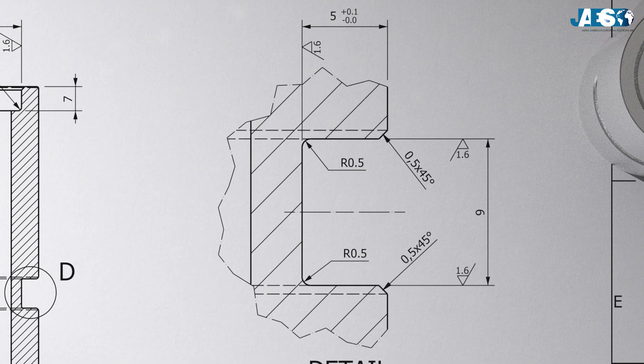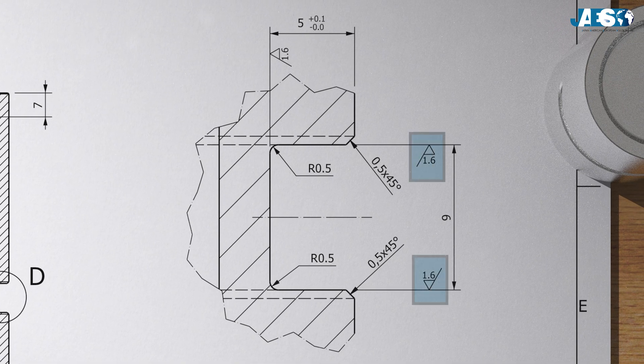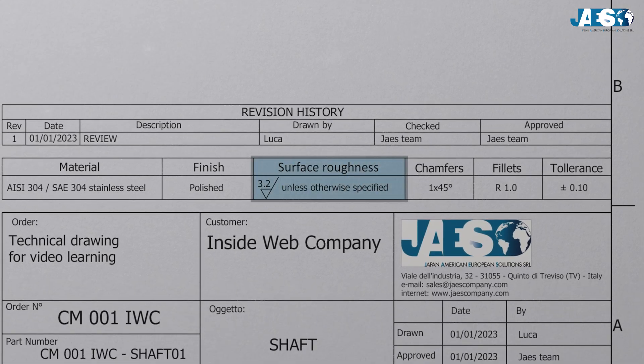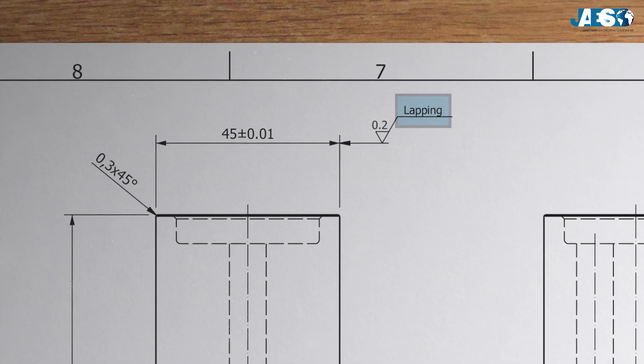Along with the dimensions, one can also indicate the surface roughness index of that particular face, which may deviate from the general roughness index. Finally, there may be notes for machining processes or warnings.